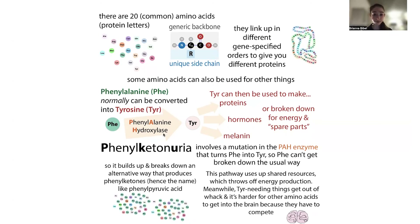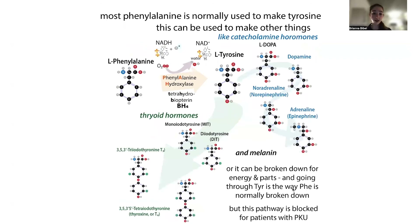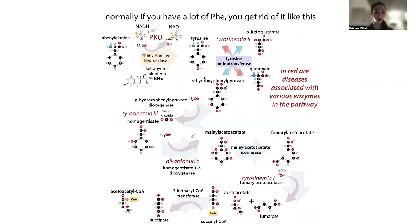What's going to happen is that you'll also get a lot of phenylalanine building up. When you have a lot of phenylalanine building up, it's going to be broken down in alternative ways, giving you things including phenylketones - which is where we get the name phenylketonuria. Urea refers to these building up and being found in the urine. This pathway is also going to use up shared resources and throw off energy production, as well as not having the tyrosine that you need. This is a genetic disorder caused by mutations in PAH. There are other disorders of tyrosine metabolism caused by mutations in different enzymes, like alkaptonuria and tyrosinemia.